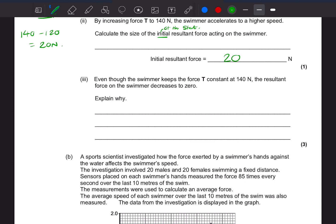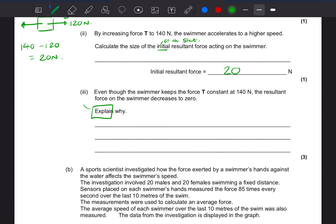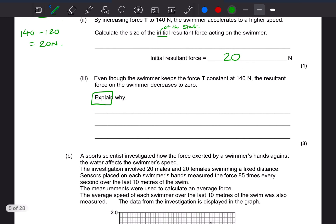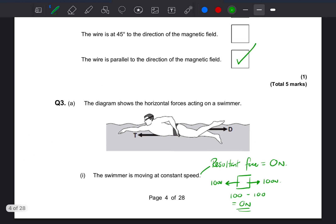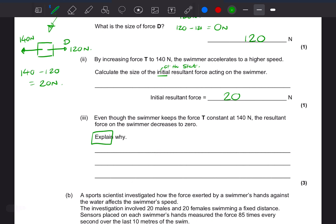20 newtons. Even though the swimmer keeps the force T constant at 140, the resultant force on the swimmer decreases to zero. Explain why. So this is the diagram I've drawn here, is the initial. But what will happen is that it will be 140 in the opposite direction. So we need to explain, and remember that is to say why. So why does it become 140? Well, if we think about this, if we go back to our picture of our swimmer, as they move forward, the swimmer is hitting water particles as they move through the water. And the faster the swimmer goes, the more water particles they hit every second. And we call that the drag force. Air resistance is a drag force, and water resistance is a drag force. So by increasing their speed, they increase their drag force.